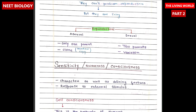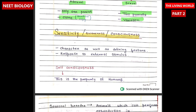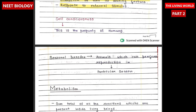Reproduction is of two types: asexual and sexual. Asexual contains one parent and produces clones; sexual contains two parents and produces variation. Sensitivity is awareness and consciousness — a character as well as a defining feature — involving response to external stimuli. Self-consciousness is a property of humans only.